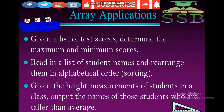First, given a list of test scores, determine the maximum and minimum scores. Number two, read in a list of student names and arrange them in alphabetical order — that means sorting. Given the height measurements of students in a class, output the names of those students who are taller than average. We can create a list for the same data type, find maximum and minimum scores, or arrange names alphabetically.